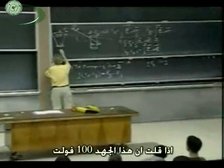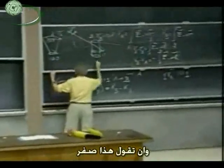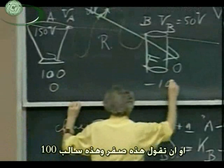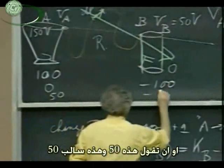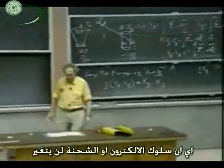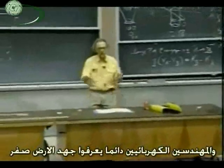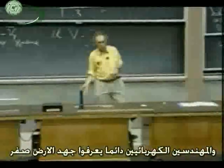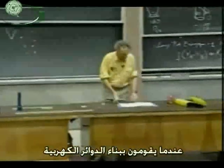If you call this potential one hundred volts and this one zero, or this one zero and this one minus one hundred, or this one fifty and this one minus fifty — the behavior of the electrons and charges would, of course, not change. And of course, electrical engineers would always, by definition, call the potential of the earth zero when they build their circuits.